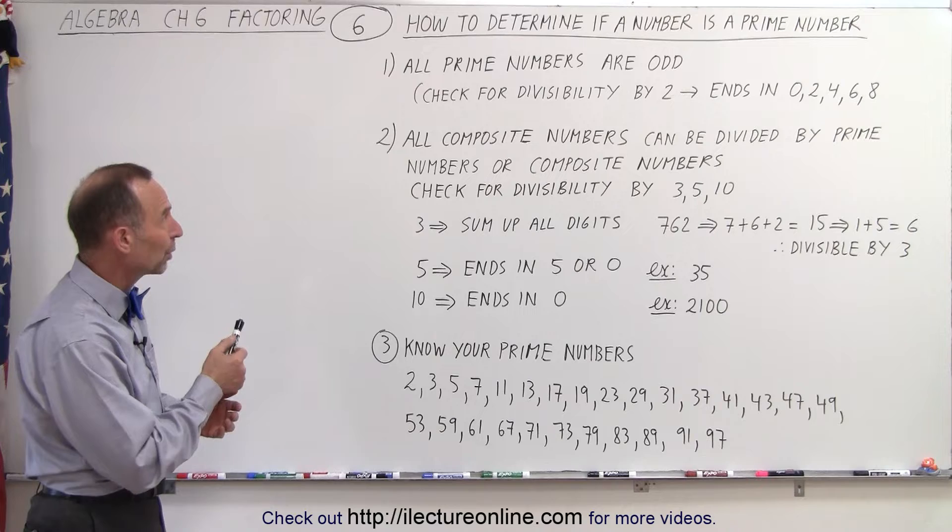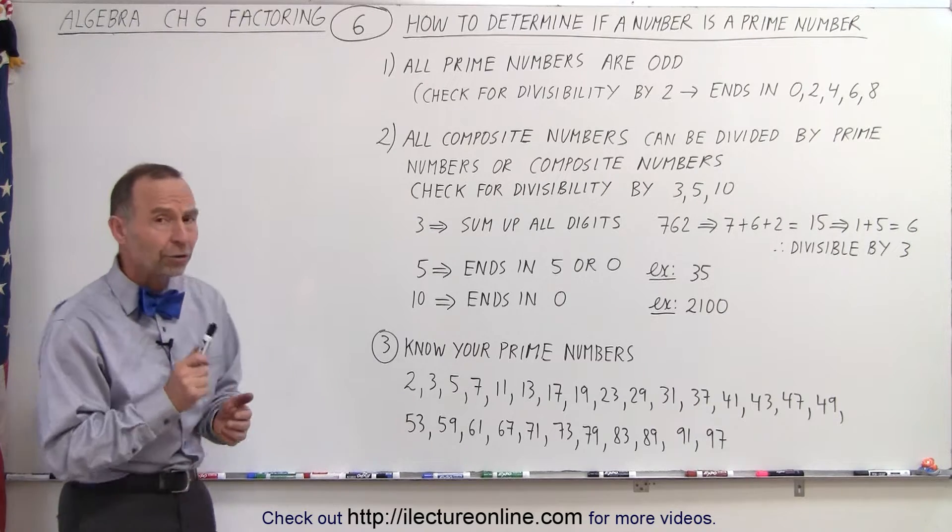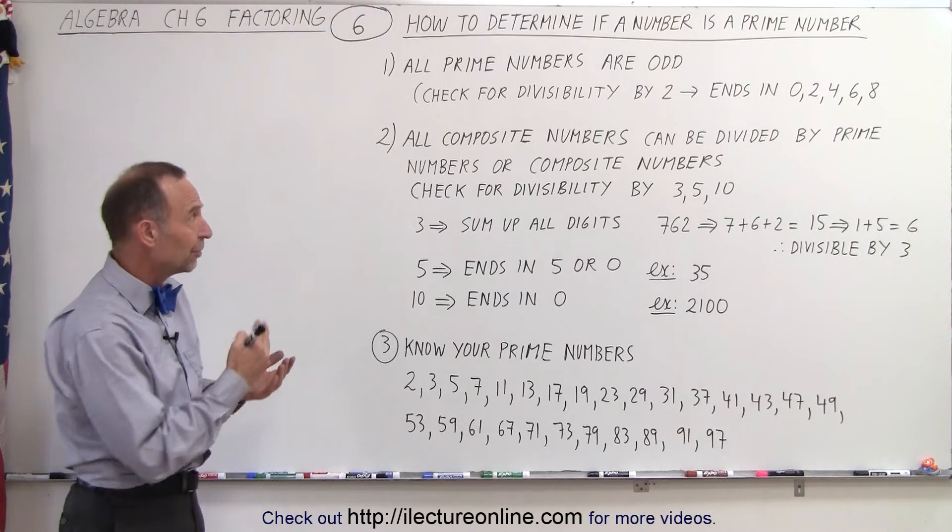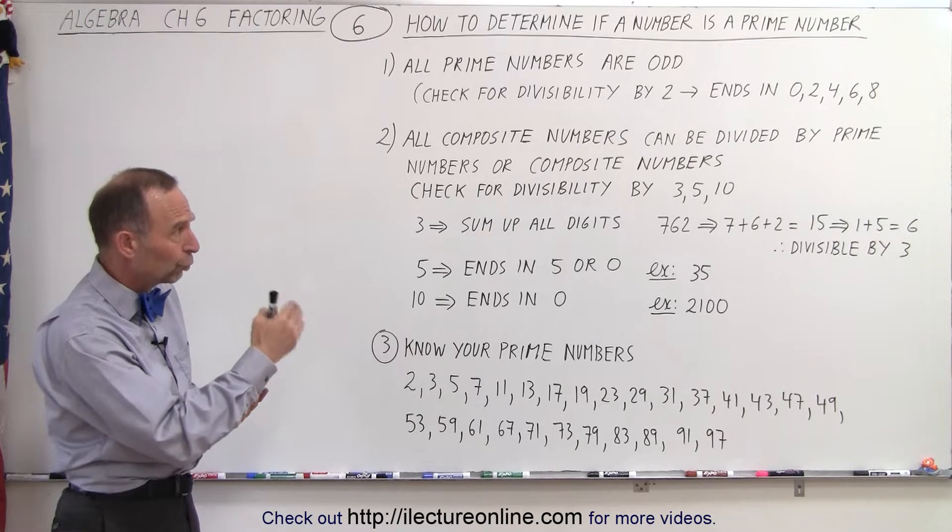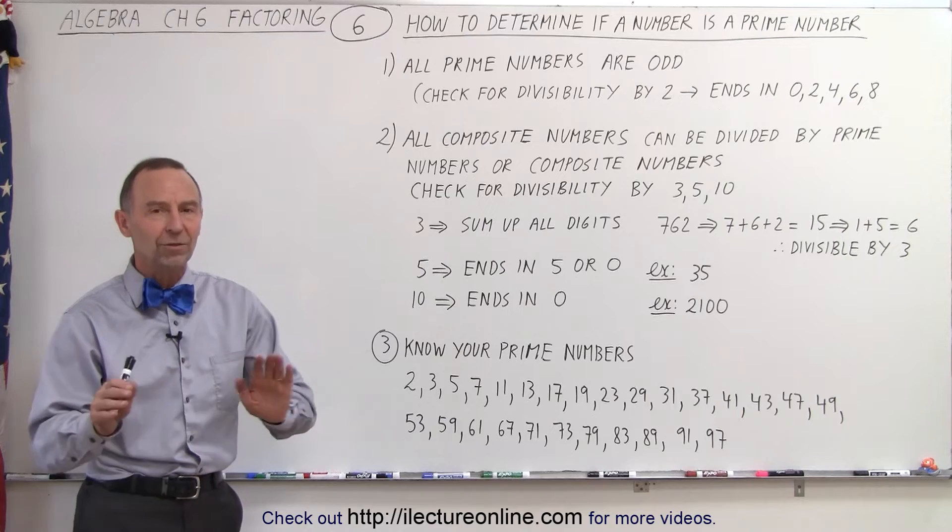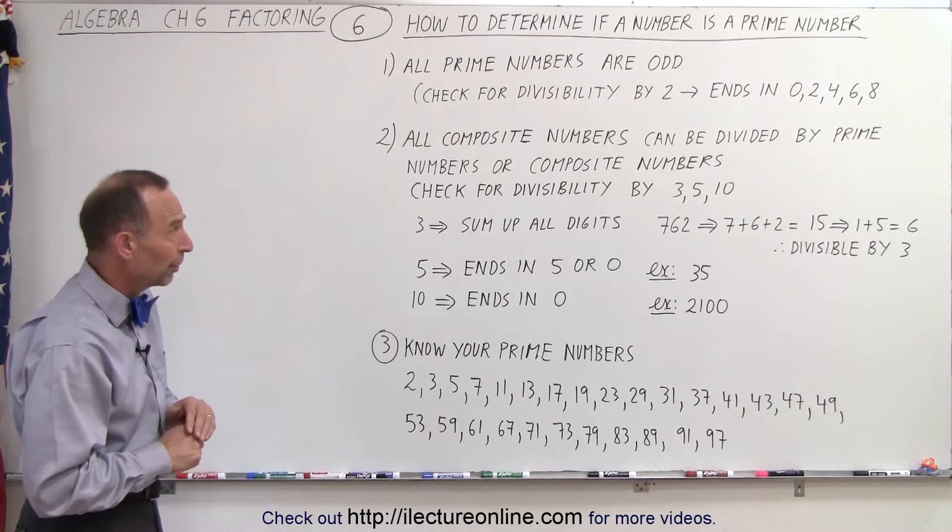First of all, we have to realize that all prime numbers are odd numbers. If a number is divisible by 2, if it ends in 0, 2, 4, 6, or 8, then we know that it's not possible for it to be a prime number.